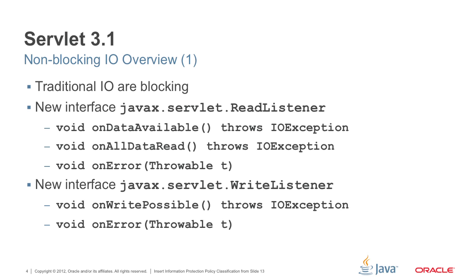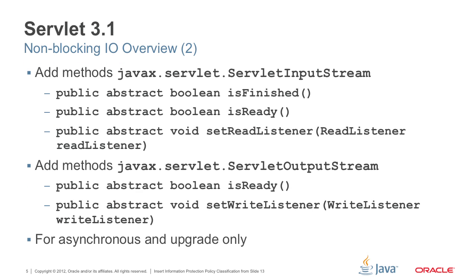Besides the ReadListener and WriteListener, we also add other methods to the ServletInputStream and the OutputStream. In the ServletInputStream, we add two helper methods: isFinished, which indicates that your input is already read, and isReady, which allows you to check whether the data is ready to read or not. We also have a method called setReadListener, which associates the given ServletInputStream with the corresponding ReadListener. A given ServletInputStream can only be associated to one ReadListener. Similarly, for the ServletOutputStream, we have isReady to check whether you are ready to write data, and you can also associate a ServletOutputStream with a WriteListener.